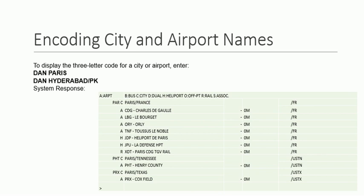For encoding city and airport names, you can enter DAN Paris, or DAN Hyderabad/PK, or the city name if you know it. The system response shows a table — for Paris, France it provides the code for Paris and France, then lists CDG Charles de Gaulle and other airport names, heliport names, and railway station names in the further lines.